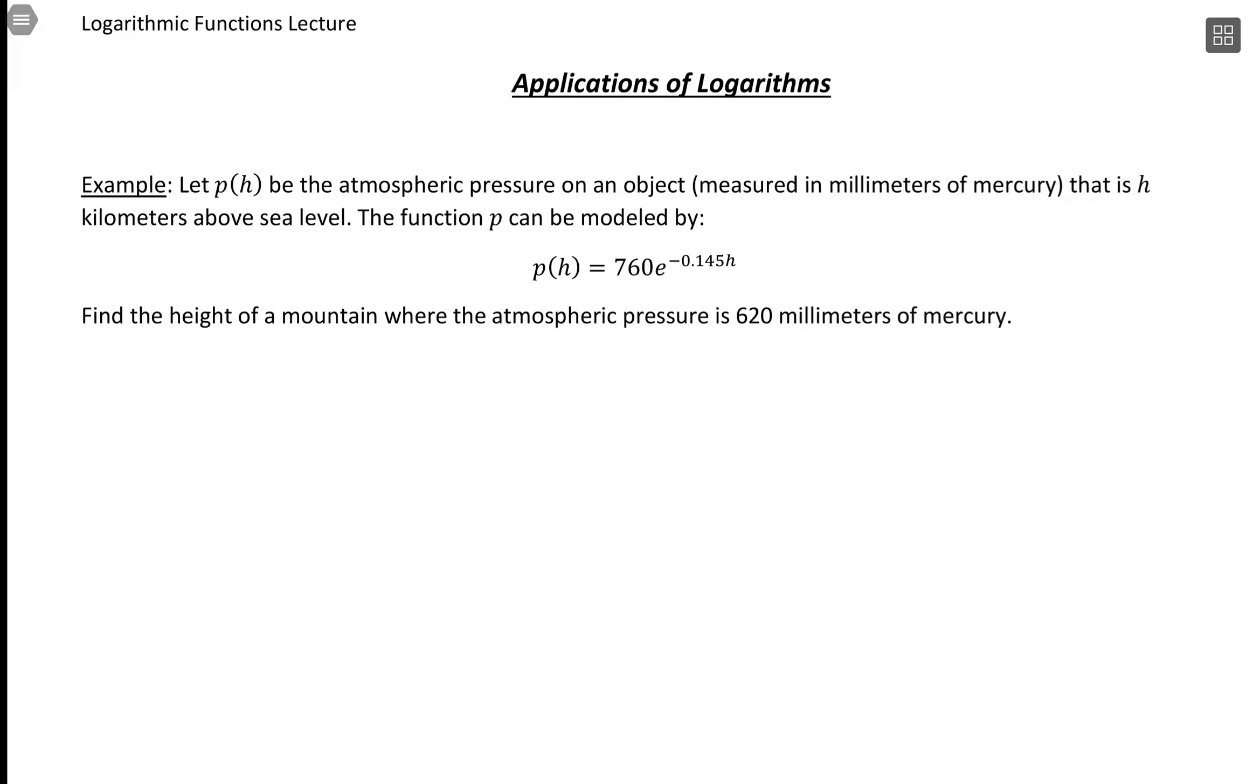So what we're given is the amount of pressure, so p is 620. What we want to find is h. Plugging into our formula here we know 620, so that's going to go on the left hand side of the equation and then on the right hand side we have everything and we want to solve for h.